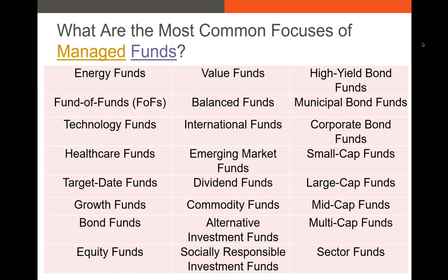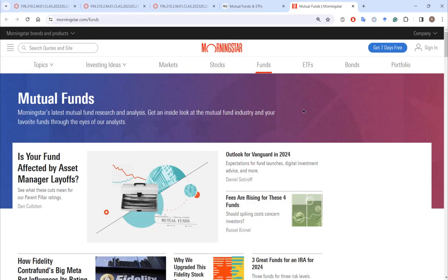There are a lot of different types of mutual funds out there. What you're looking at is a list of the types of open-end funds. Some funds target energy investments — energy stocks, energy bonds. Some target energy value stocks, or stocks with high book-to-market ratios. Some target high-yield bonds, so junk or non-investment-grade bonds. These represent a series of objectives of different open-end mutual funds.